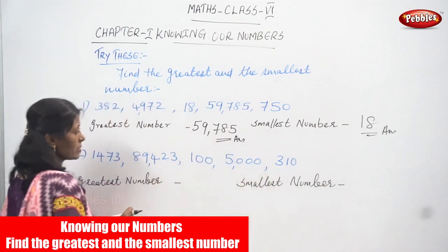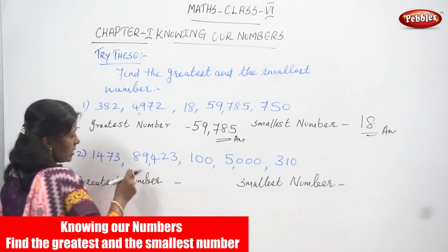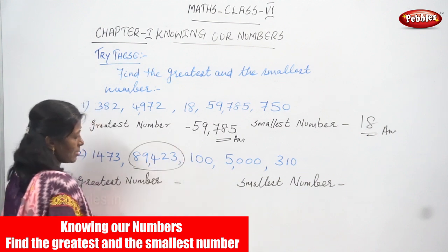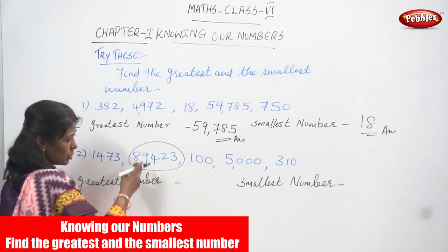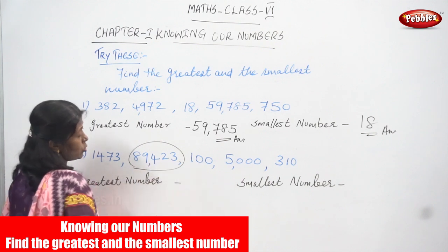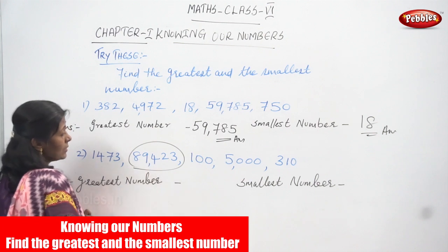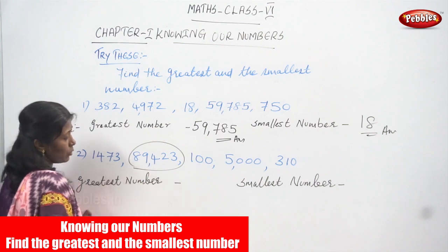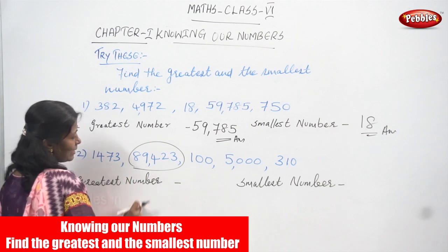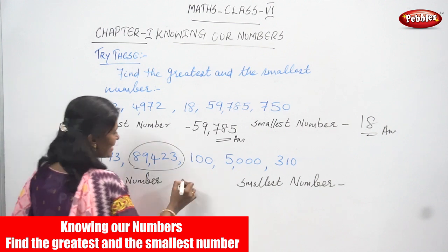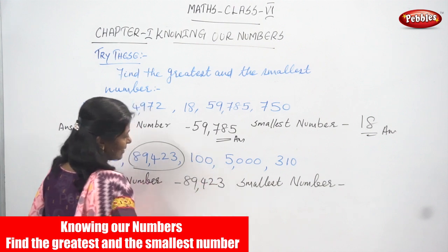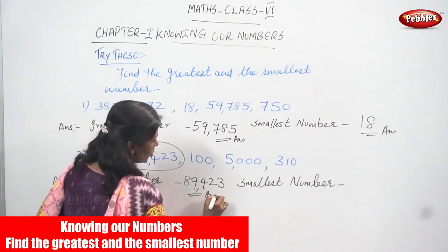So, you have to consider the greater number of digits. So, 89,423 is the greatest number. I will just show you — counting: 1, 2, 3, 4, 5 — the number of digits is 5. This is the greater number of digits, so 89,423 is the greatest number. This is the right answer for this question.